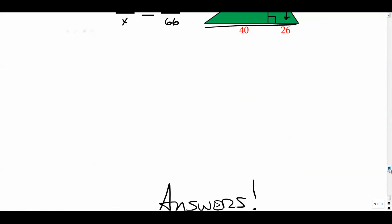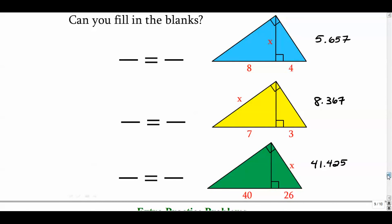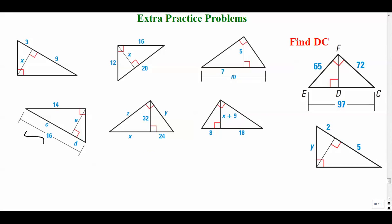There are the answers. Now there are some extra optional practice problems. Some involve similarity, some are more basic. One has a binomial, another uses three different letter variables. I'd suggest starting with the simpler ones first. Pause and try them — the answers will appear on screen in a moment.